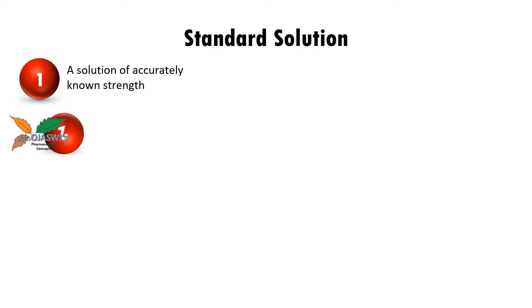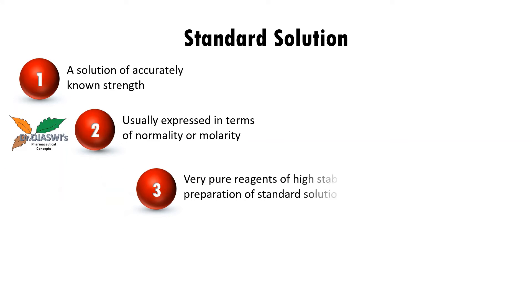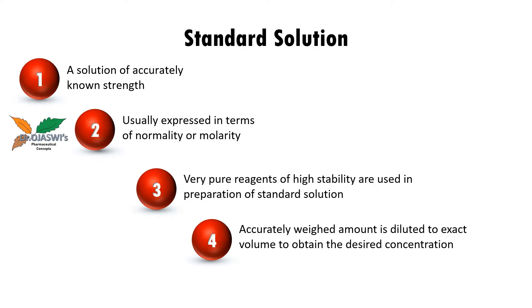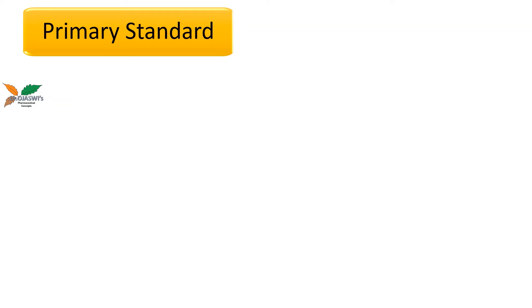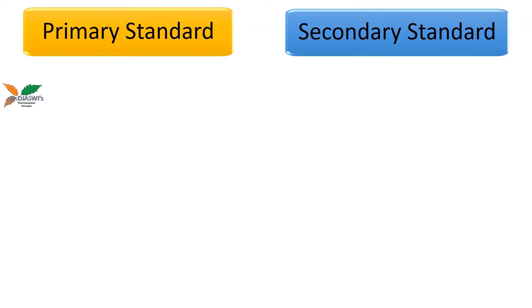This slide we have already seen in my earlier video on introduction to volumetric analysis, where we had seen what does standard solution exactly mean in pharmaceutical analysis or in volumetric analysis. Now in this video we will see two types of standard solutions: primary standard and secondary standard. What are the various types, properties and examples of primary standard and secondary standard that we will be seeing in this video.